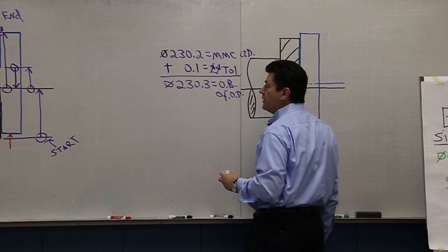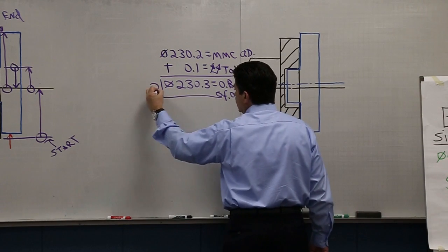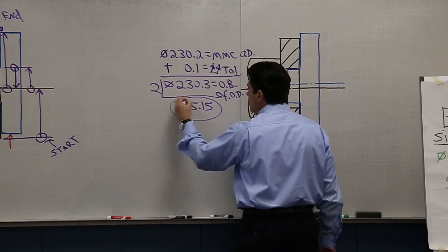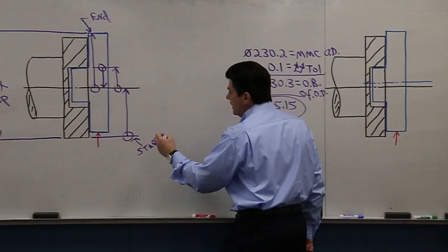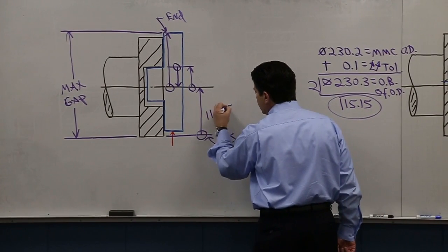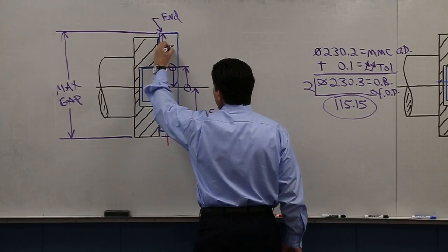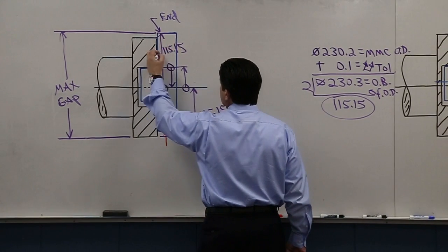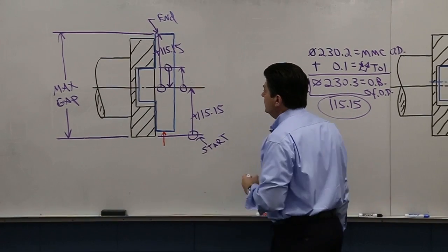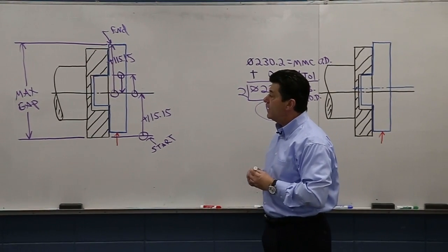We want to work in radii, so we divide 230.3 by 2 and get 115.15. This gives us two of our numbers: Step 1 is 115.15 and Step 4 is 115.15. Since both of those go up, they're both positive numbers. The only thing we don't know yet is the middle.